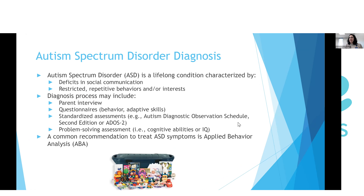Autism Spectrum Disorder is a lifelong condition characterized by two main components. One is deficits or difficulties in social communication. This can include difficulties with back-and-forth conversation or play, difficulty with nonverbal communication — including not just eye contact but facial expressions and gestures — and integrating all of those things together to communicate. Finally, there are things about relationships: understanding relationships, as well as being able to form and maintain friendships.